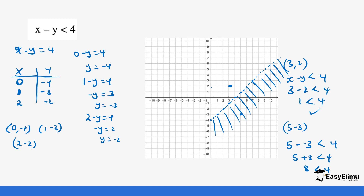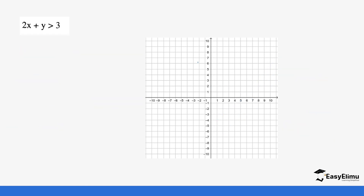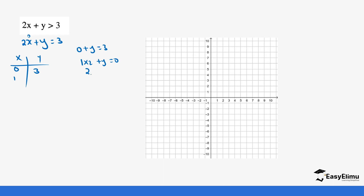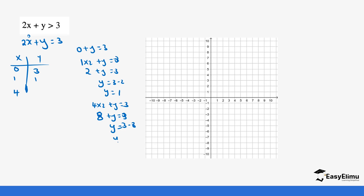Let's do one more question to reinforce the point. We have 2x plus y, and we convert it to the equation 2x plus y equals 3. When x is 0: 0 plus y equals 3, so y equals 3. When x is 1: 2 times 1 plus y equals 3, so 2 plus y equals 3, meaning y equals 1. Let's pick a bigger value — x equals 4: 4 times 2 plus y equals 3, so 8 plus y equals 3, giving y equals 3 minus 8, which is y equals negative 5.